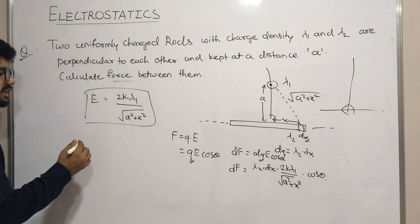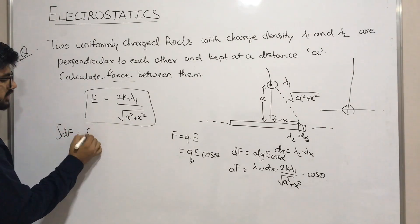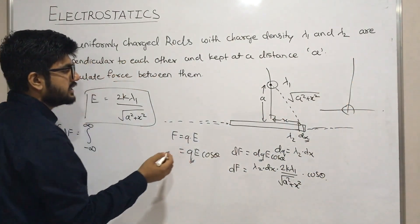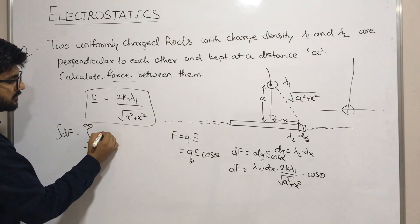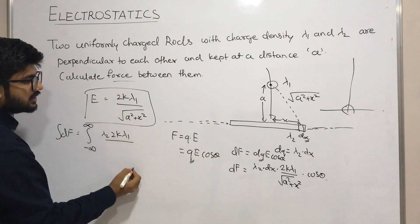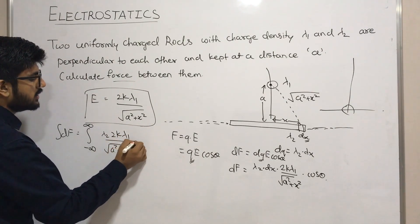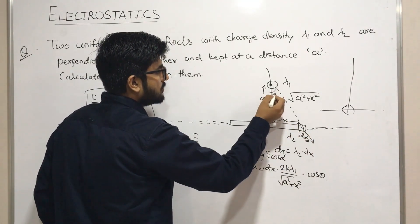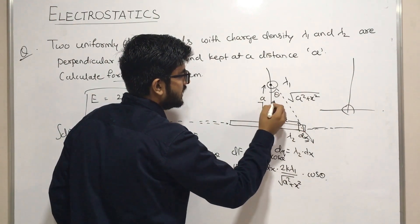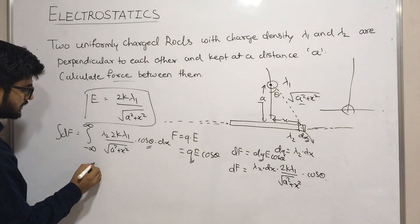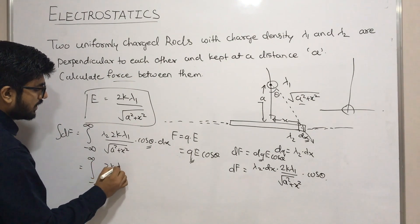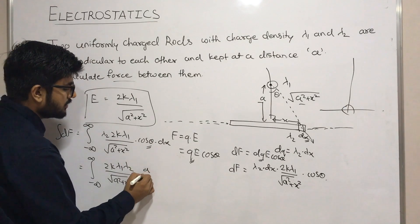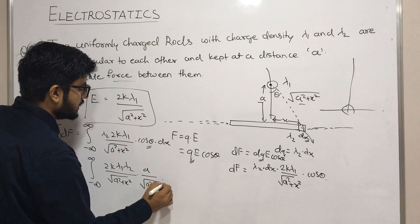Now let's integrate dF from minus infinity to plus infinity, since the rod is infinitely long. The total force F = λ2 · integral from −∞ to +∞ of [2k·λ1 / √(a²+x²)] · cos(θ) · dx. The value of cos(θ) is a / √(a²+x²). Substituting: F = integral from −∞ to +∞ of 2k·λ1·λ2·a / (a²+x²) dx.